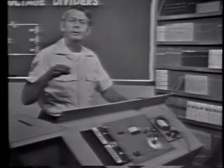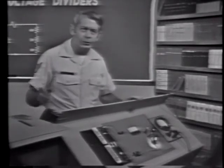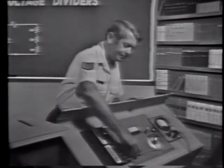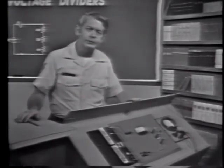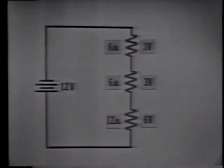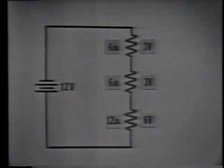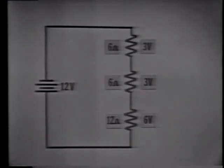If we load the circuit more, the voltages in the divider will change more. The important thing is the voltage divider is no longer providing the voltages we started out with. Using this diagram we can see this more clearly. This voltage divider has two six-ohm resistors and one 12-ohm resistor. The power source is 12 volts. With these values of resistance, the voltage drops are three volts across each six-ohm resistor and six volts across the 12-ohm resistor.